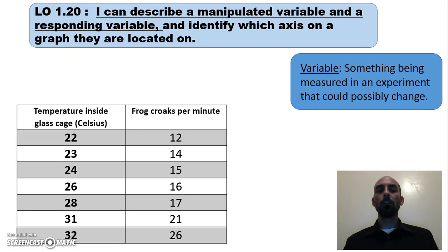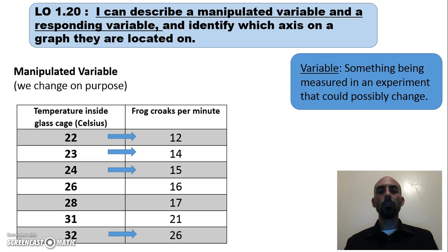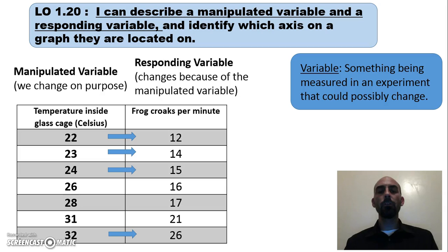Let's look at some data gathered from research to help us describe a manipulated variable. Looking at this data table, the researchers were measuring the temperature inside a glass cage and the number of croaks a frog would make per minute. The temperature was changed on purpose, making it the manipulated variable, and as temperature changed, the frogs' croaks per minute increased — that's the responding variable.